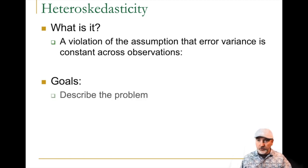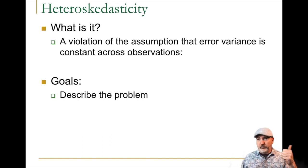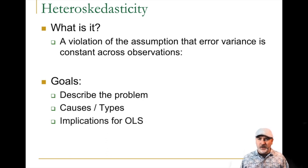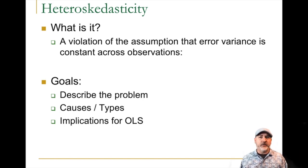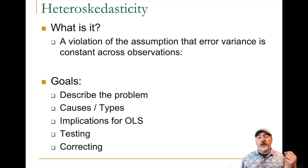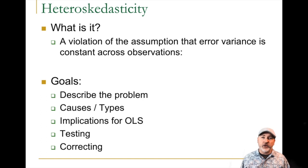Our goals across at least two parts of these lecture videos: we'll describe the problem and give a proper definition. We'll think about what scenarios are more likely to lead to this type of problem — the different causes of heteroscedasticity. The big question is why do we care? What are the implications of estimating a model with a heteroscedastic error? Then how do you tell when that's the case, what are some ways of testing your OLS regression, and when we inevitably find it, how do we fix it?